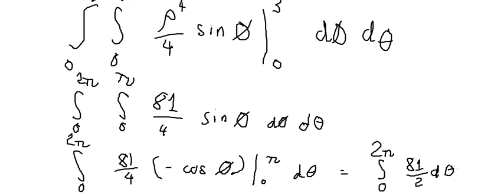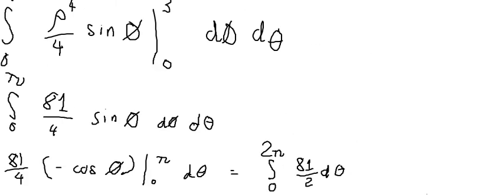D theta, and the last one, we got 81 over 2 multiply with 2 pi minus 0, so you got 81 pi. This is the final answer. That is the end, thank you for watching.